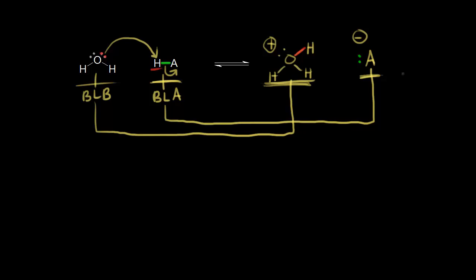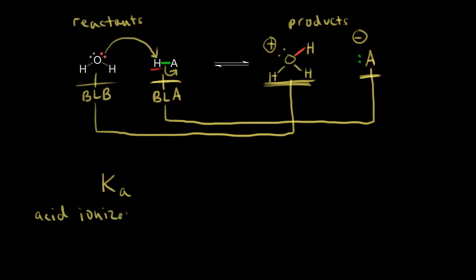Once this reaction reaches equilibrium, we can write an equilibrium expression. We're going to consider the stuff on the left to be the reactants and the stuff on the right to be the products. So let's write our equilibrium expression. We write our equilibrium constant, and now we're going to write Ka, which we call the acid ionization constant — or you might hear acid dissociation constant. Either one is fine.